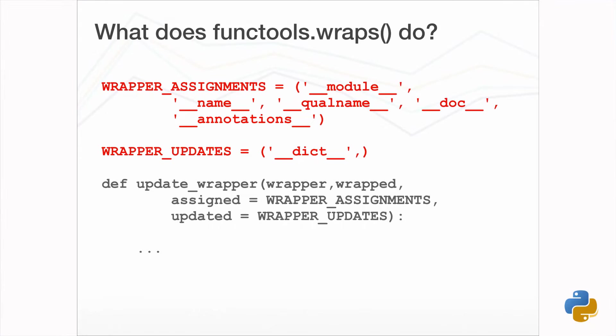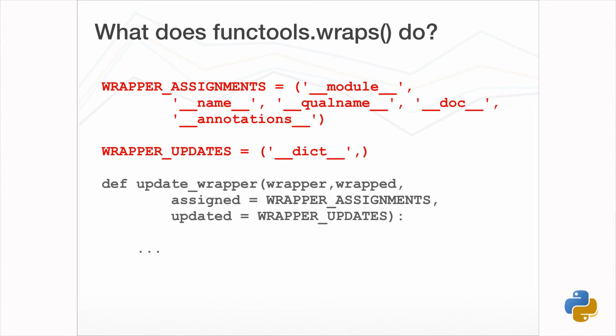We solved naming using functools.wraps and functools.update_wrapper before. functools.wraps just uses update_wrapper, so we need to look at that. Looking at Python 3.3 — which actually has a bug fixed in Python 3.4 — the key thing to remember is what is in the default variables passed as assigned and updated.